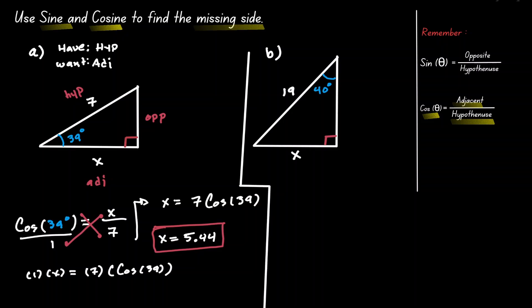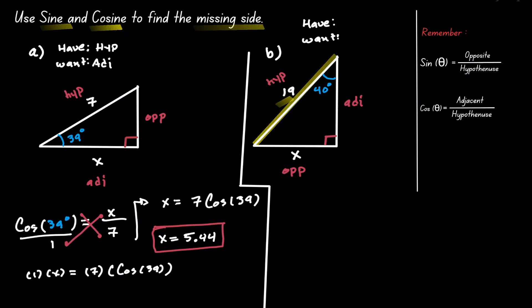Let's take a look at the example on the right. Let's start by identifying our reference angle, which is 40 degrees. Let's label our triangle: opposite of 90 degrees, that's the hypotenuse; opposite of the reference angle, that's the opposite; and the side that is left is the adjacent. Now let's think about what it is that we want and what it is that we have. We have information about the hypotenuse, and we want information about the opposite. Then it makes sense for us to use sine, because sine has been defined as opposite over hypotenuse — which is the information that we want and what we have.